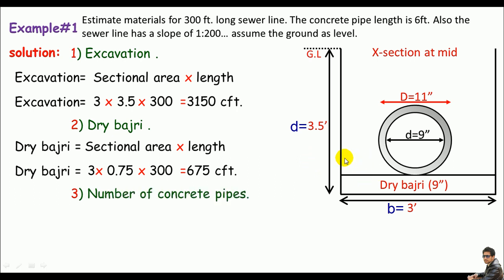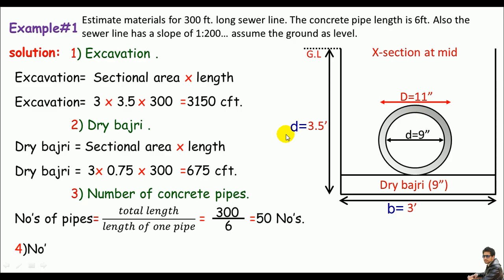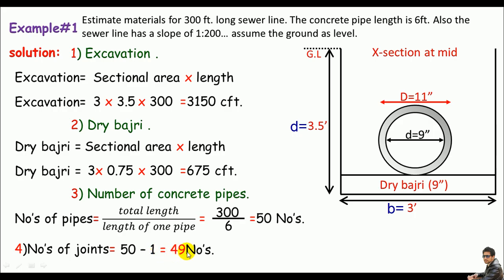For the number of pipes required, divide the total sewer line length by the length of one pipe: 300 feet divided by 6 feet equals 50 pipes. For the number of joints, subtract 1 from the number of pipes because we don't need a joint at the end of the sewer line. So 50 minus 1 equals 49 joints.